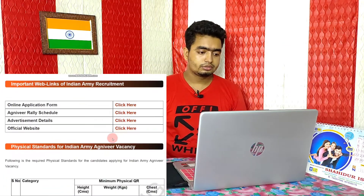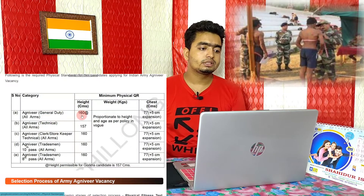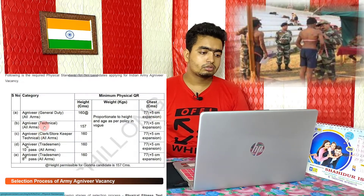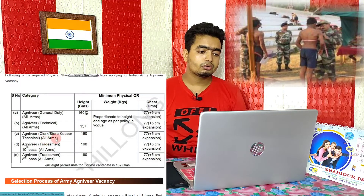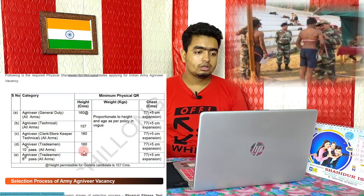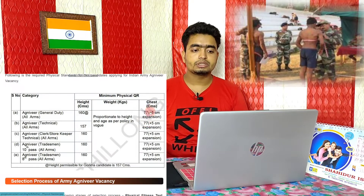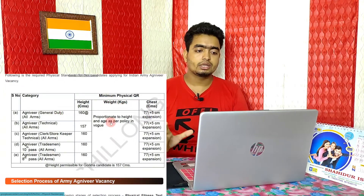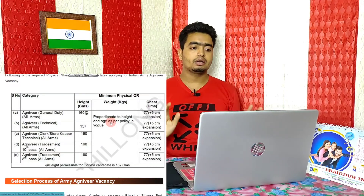Now I will show you the physical standard test. For General Duty, the required height is 160 cm and chest is 77 cm. For the Technical post, the required height is 157 cm. The General Duty and Technical physical requirements follow the same pattern, and extra chest expansion width is also required.